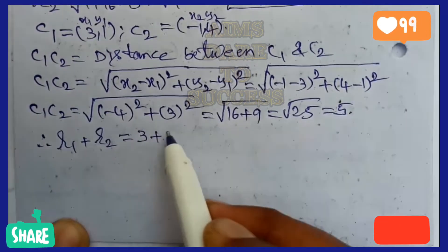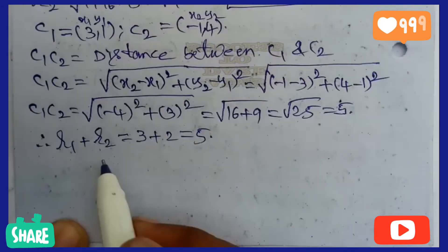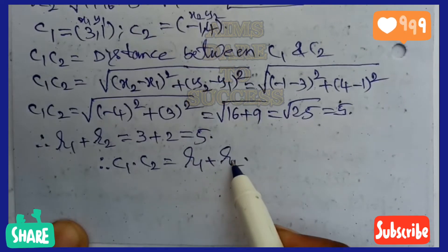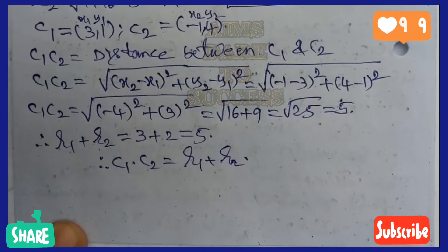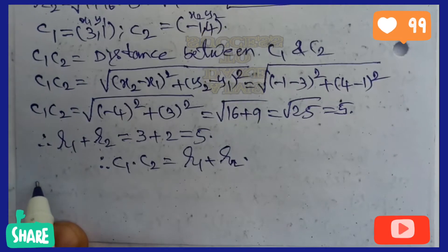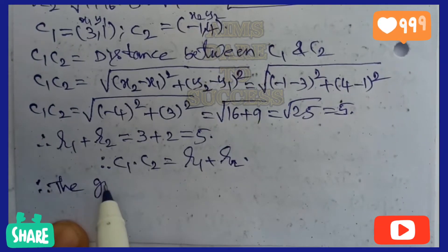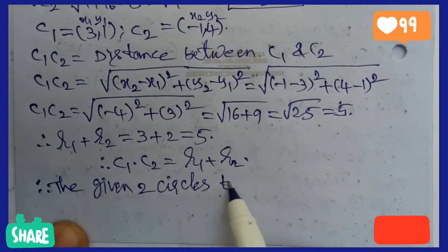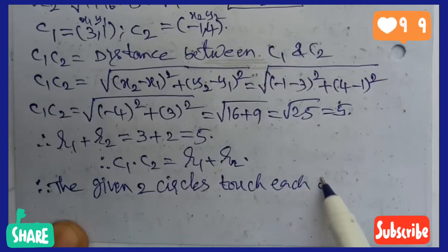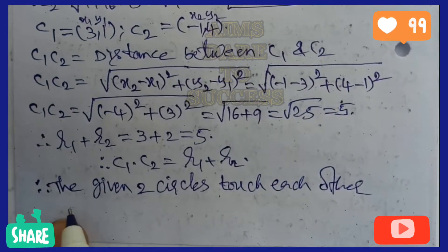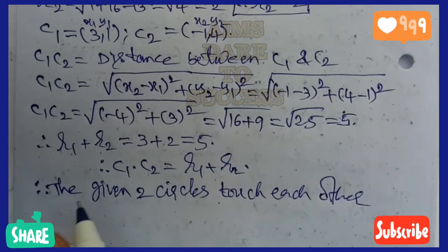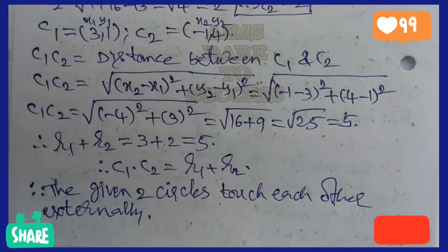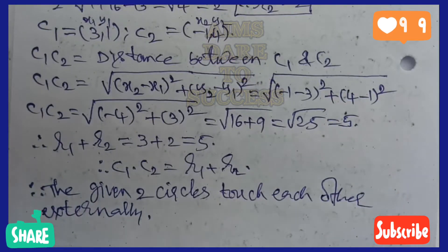Next, the relation between r₁ and r₂: r₁ + r₂ = 3 + 2 = 5. So c₁c₂ = r₁ + r₂ = 5. My dear students, if you do not write this condition, you will not get one mark. The given two circles touch each other. If c₁c₂ = r₁ + r₂, the given two circles touch each other externally. This is a very, very important condition.